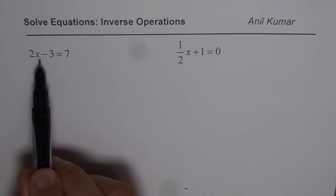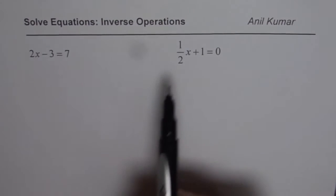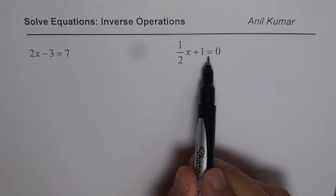The first one is 2x minus 3 equals 7 and the second one is half x plus 1 equals 0.